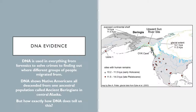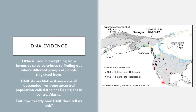DNA has practical uses in our society, from forensics to solve crimes to finding out where different groups of people migrated from. If you've wondered about sites like AncestryDNA.com, they take your DNA and tell you somewhat where you come from by looking at certain sequences of DNA. Scientists have recently found that DNA shows that Native Americans all descended from one ancestral population called ancient Beringians in central Alaska. Through their DNA, all Native Americans in North and South America were traced back to this one group.